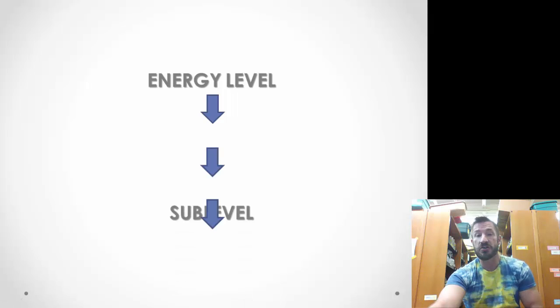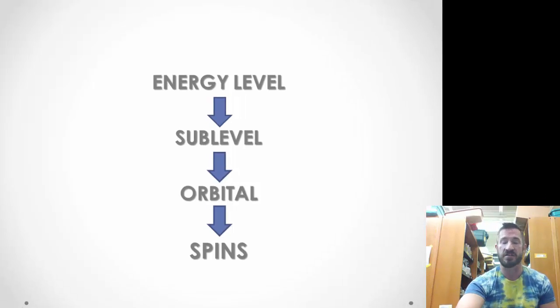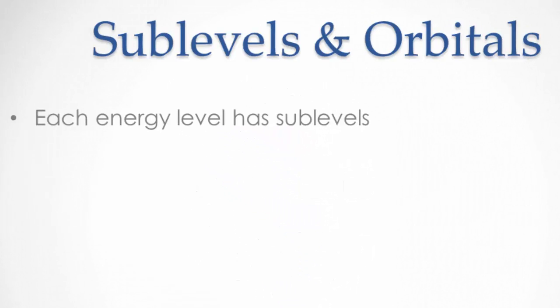Within those energy levels, we have sublevels. Within the sublevels, there are orbitals. And within those orbitals, electrons have different spins. One can spin clockwise and counterclockwise, so we have spins as our last level.